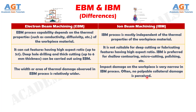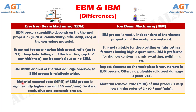And Difference Number 12. Material removal rate of Electron Beam Machining process is significantly higher, around 40 cubic millimeter per minute, so it is a productive and economic process, whereas material removal rate of Iron Beam Machining process is very low, in the order of 2 into 10 inverse 4 cubic millimeter per minute.